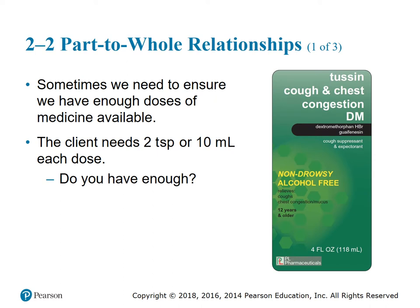Sometimes you might be asked to figure out how many doses are available in one bottle. Here we have Tussin cough and chest congestion, and if you look at the bottom corner, you'll see that it contains 118 milliliters. If a client needs two teaspoons, or the equivalent of 10 mLs in each dose, do we have enough?